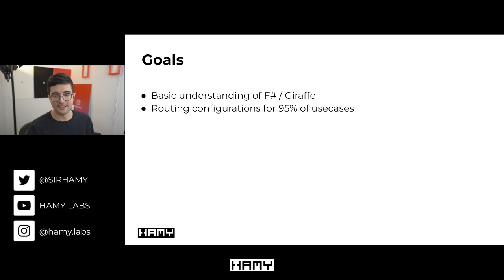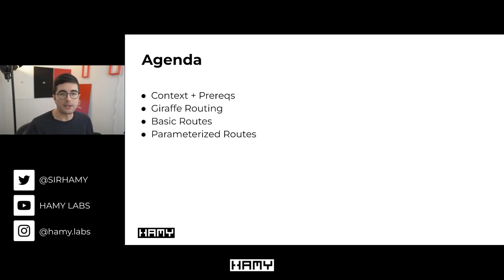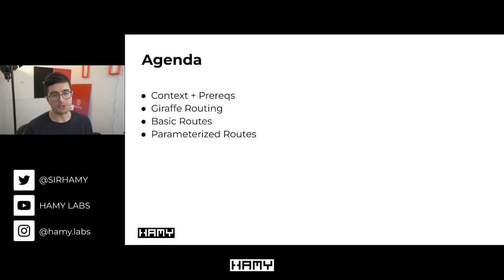The last 5% can get a little complicated and weird, but for most cases this should be enough. First we're going to start with some context and prerequisites you'll need to follow along successfully. Then we'll give an overview of how Giraffe does its routing, go into some basic routes which will make up most of what you do in your web APIs, and finish off with some parameterized routes which gives you a little bit more power.